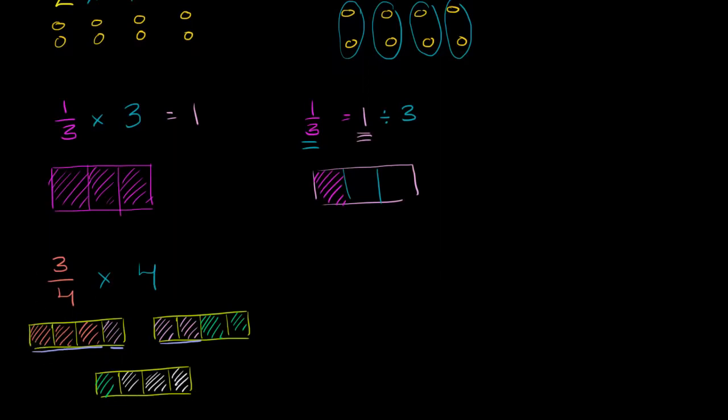So notice, now I have 1 three fourths, 2 three fourths, 3 three fourths, and 4 three fourths. And what did I do when I got those 4 three fourths? Well, it's pretty clear. This is turned into 3 wholes. So this is equal to 3 wholes.